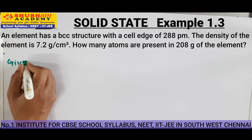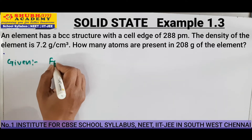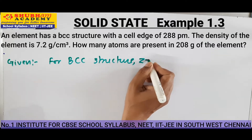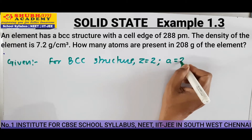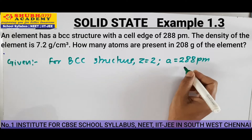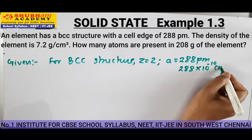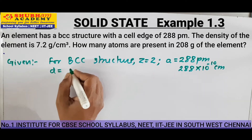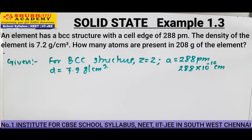Given: the element has BCC structure, so Z is equal to 2. Edge length A is equal to 288 PM, that is 288 into 10 to the power minus 10 centimeter. Density is equal to 7.9 gram per centimeter cube. We have to find the number of atoms in 208 gram of the element.